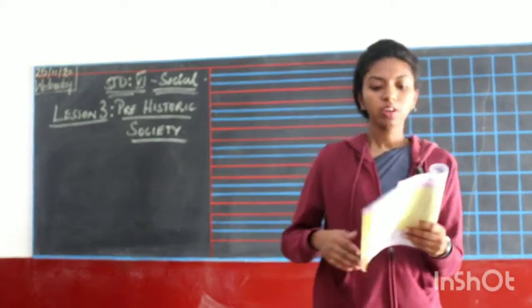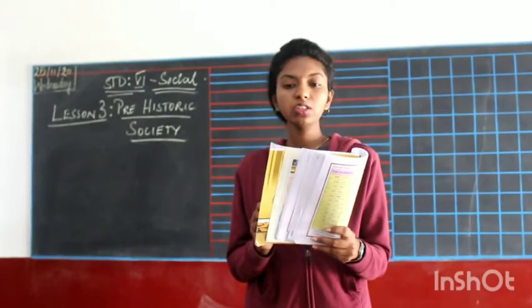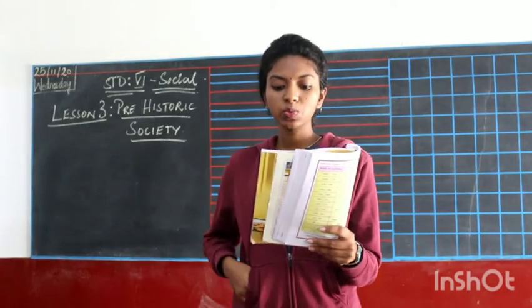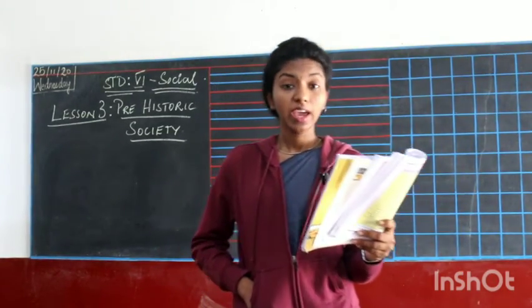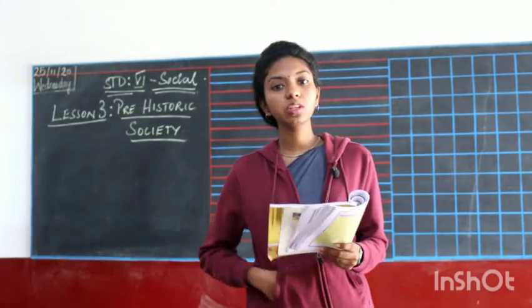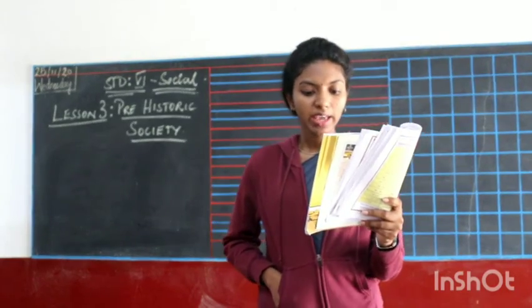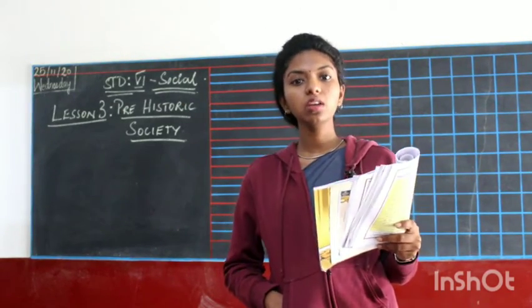The second age in the prehistoric period is called the Mesolithic age. This is the period between the Paleolithic and Neolithic ages. During this period, human beings started using small tools that were more efficient than bigger ones. Hence this period is also called the Micro-lithic age, because 'micro' means small.